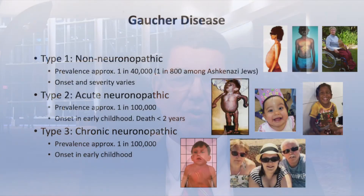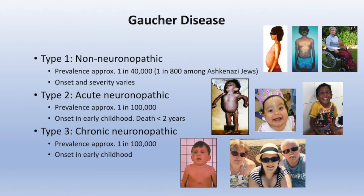There are three major classifications of Gaucher disease. The most common in the United States, Western Europe, and Israel is type 1, or non-neuronopathic disease. It is called non-neuronopathic because individuals generally have no evident central nervous system involvement, though a small number at an advanced age — over 60 or 70, occasionally earlier — can develop symptoms of Parkinsonism.